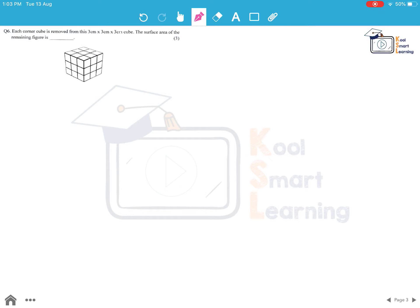Moving to the next question. Each corner cube is removed from this 3 by 3 by 3 cm cube. The surface area of the remaining figure is. Okay so first of all what is the surface area of the given cube.